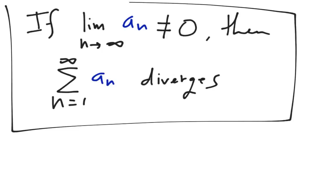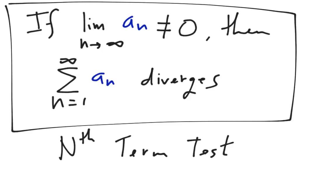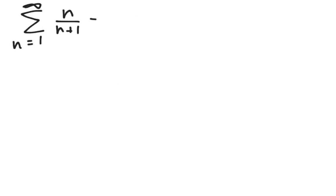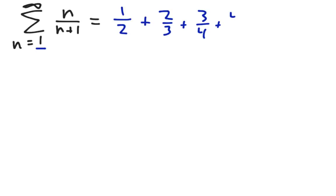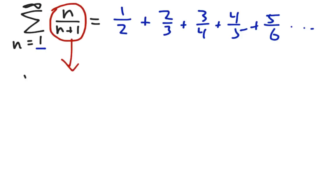This is the nth term test — put that in your notes. Let's see the nth term test in action. Let's say I have the series n over n plus 1. Plugging in values for n: starting with n equals 1, we get 1/2, plus 2/3, plus 3/4, plus 4/5, plus 5/6, and so on. Let's apply the nth term test. We look at the sequence and take the limit as n goes to infinity of n over n plus 1.